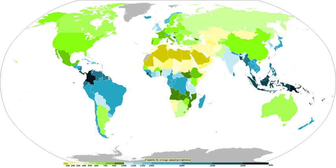On the large scale, the highest precipitation amounts outside topography fall in the tropics, closely tied to the intertropical convergence zone, itself the ascending branch of the Hadley Cell. Mountainous locales near the equator in Colombia are amongst the wettest places on Earth. North and south of this are regions of descending air that form subtropical ridges where precipitation is low; the land surface underneath these ridges is usually arid, making up most of the Earth's deserts. An exception is in Hawaii, where upslope flow due to the trade winds leads to one of the wettest locations on Earth.